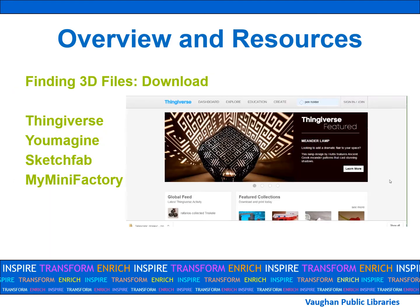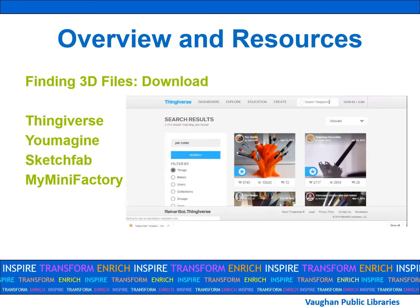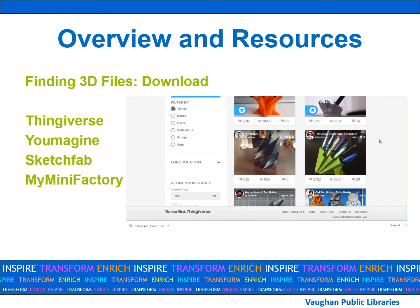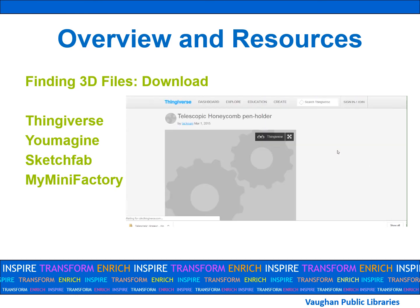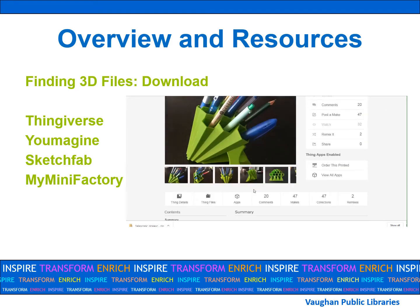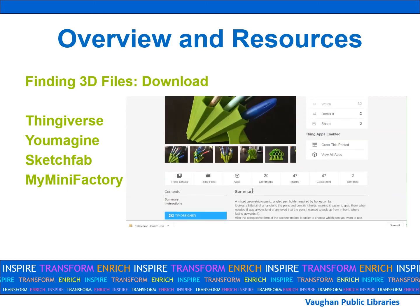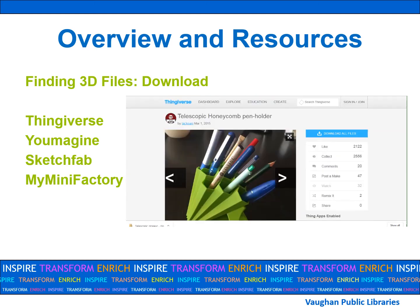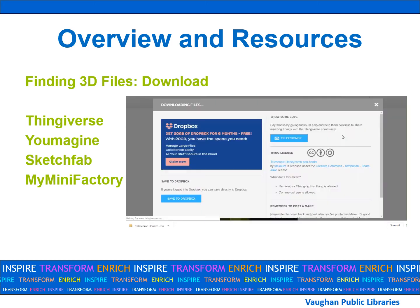There are various websites that offer free downloads of public 3D creations. We recommend using Thingiverse, Uimagine, Sketchfab, and MyMiniFactory. As an example, let's do a search for a pen holder on Thingiverse. Of the thousands of designs, select the one you like best. You can see pictures of a real 3D printed creation from all angles, as well as comments from other users. To download, click on Download All Files.